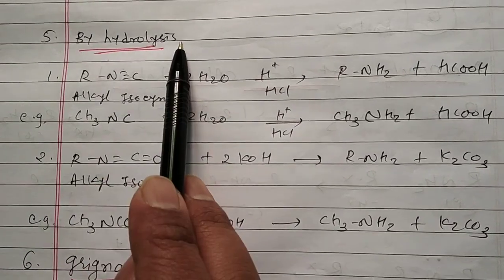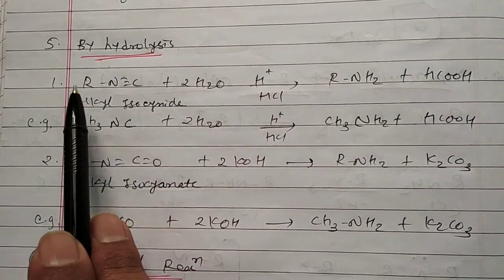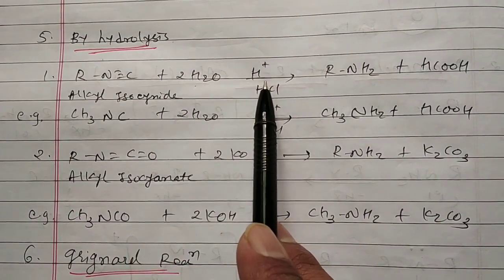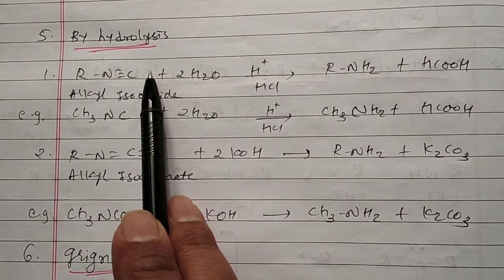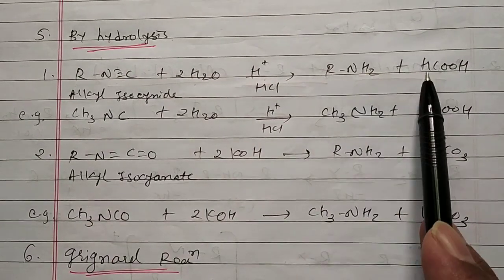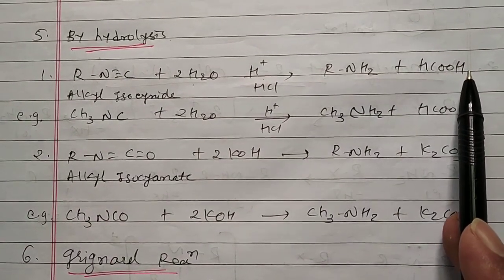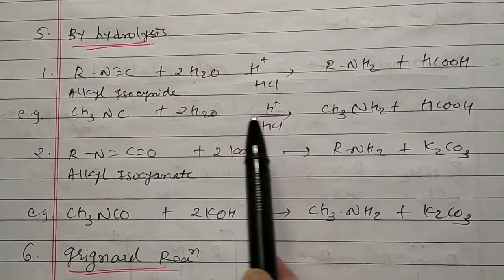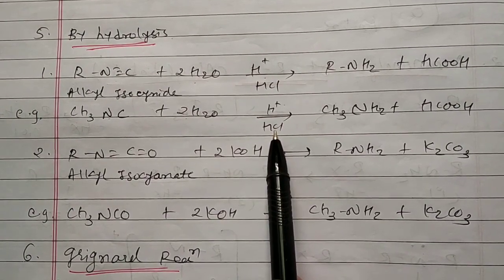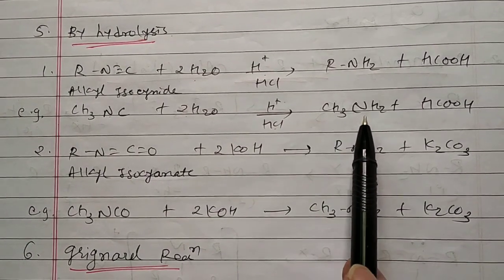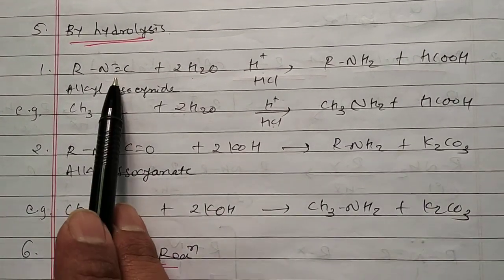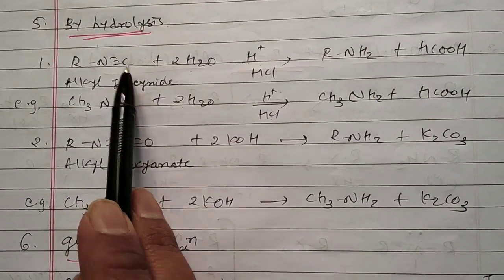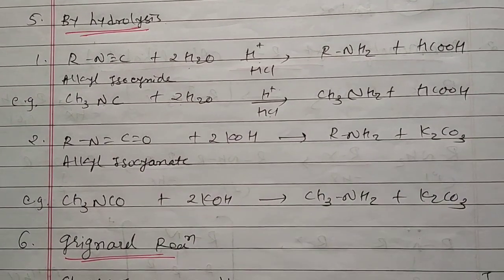Fifth is hydrolysis. R-NC, this is alkyl isocyanide, when treated with H2O in the presence of acidic condition HCl. Its hydrolysis will occur, you get R-NH2 and HCOOH is your byproduct. Example: CH3-NC, 2 moles of H2O and HCl, acidic condition hydration will occur, you get CH3-NH2 plus HCOOH. Means once again, here is a double bond, breaks, breaks. NH2 goes to here and O goes to here, you get HCOOH is your byproduct and primary amine you get.